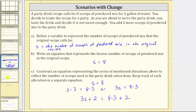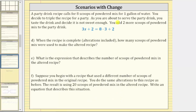Let's move along to Part D. I've copied the last equation from the bottom of the previous slide here in blue, which represents the alterations to the original recipe. For Part D: when the recipe is complete, alterations included, how many scoops of powdered mix were used to make the altered recipe?